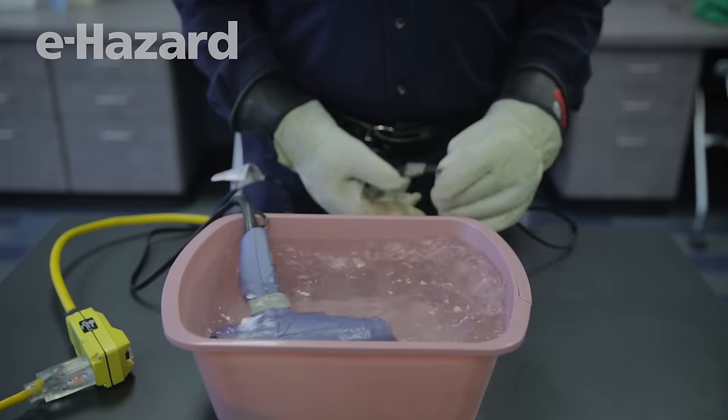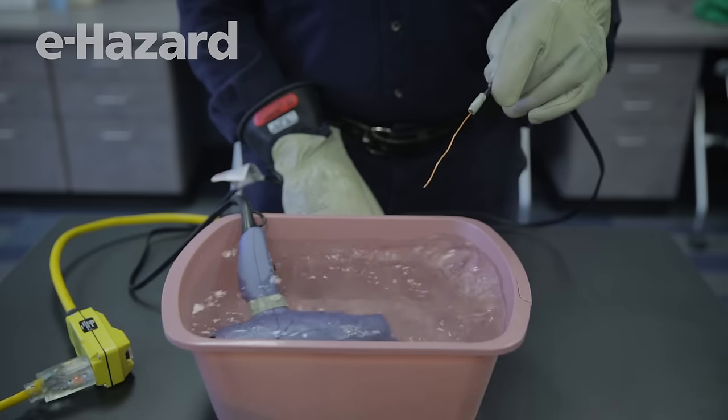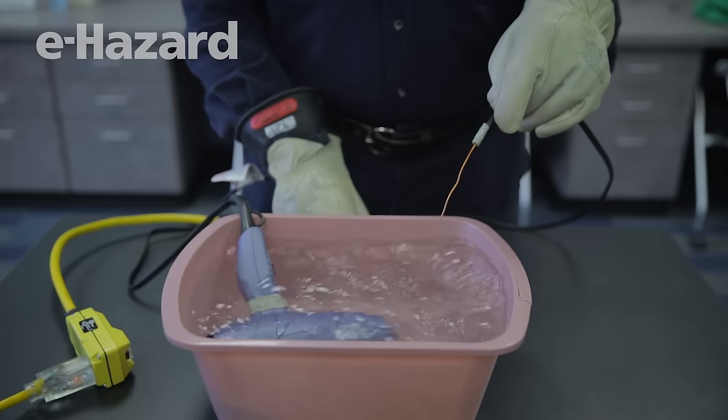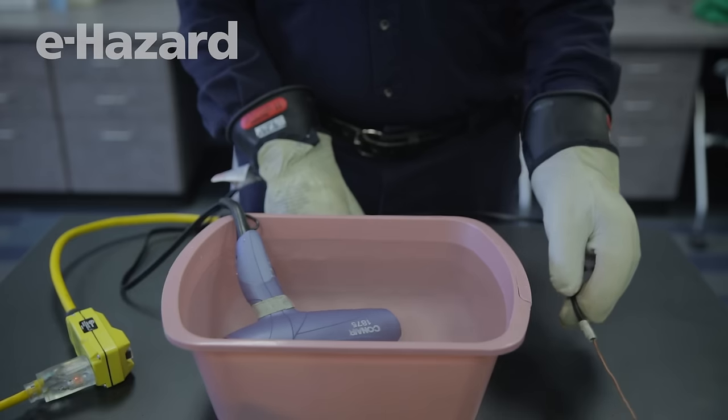So watch what happens when I take the ground rod. I can put it anywhere in this water, and as soon as I establish a ground, the current's going to flow through this ground rod back to the GFI, and it should trip. Now at this point, the power's taken off.